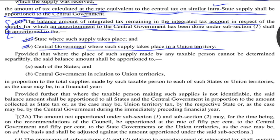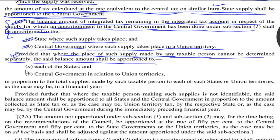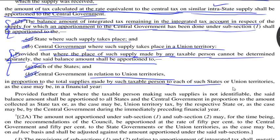Let's see what the proviso prescribes. Where the location of such supply made by any taxable person cannot be determined separately, the state balance amount shall be apportioned to each state and central government in relation to union territories. This shall be apportioned in proportion to the total supplies made by such taxable person to each such state or union territory, as the case may be, in a financial year.